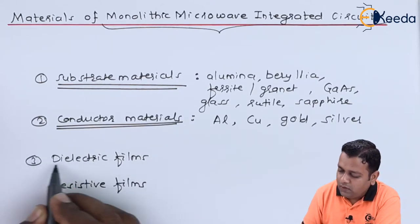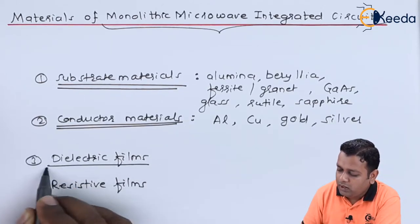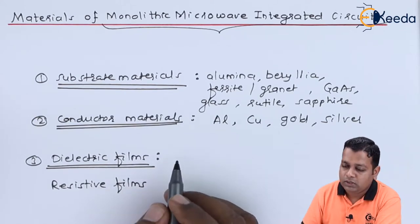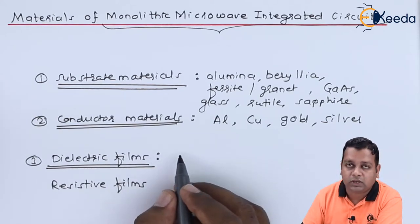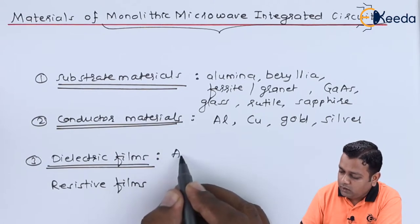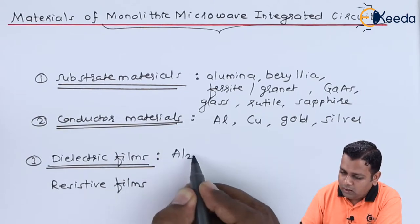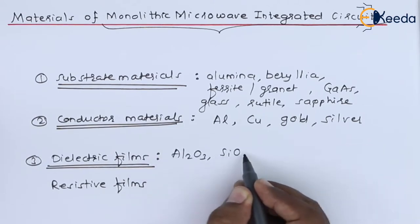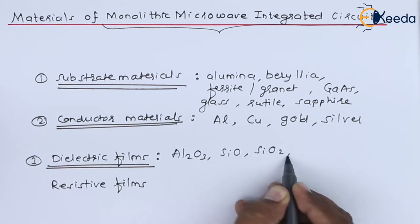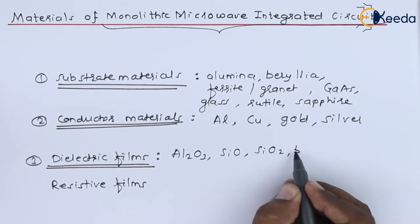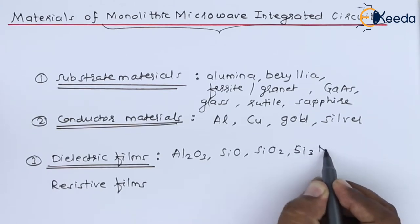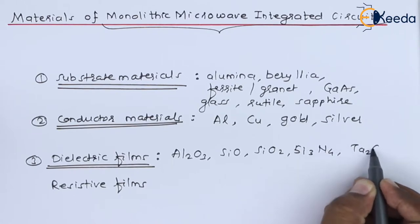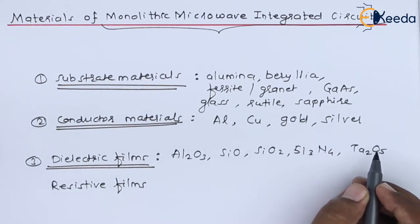The third type requires dielectric films to be generated. The materials for dielectric films are Al₂O₃, SiO, SiO₂, Si₃N₄, and Ta₂O₅.